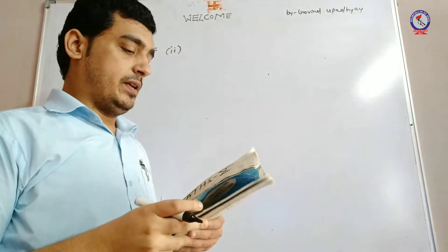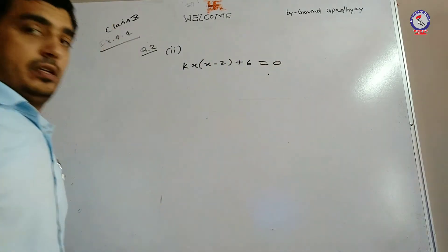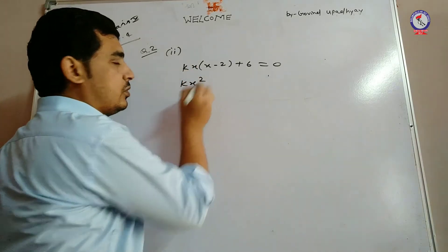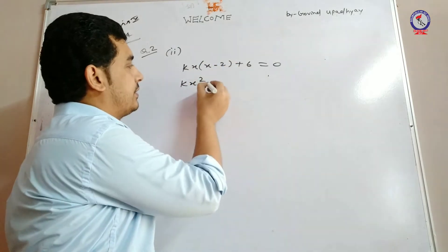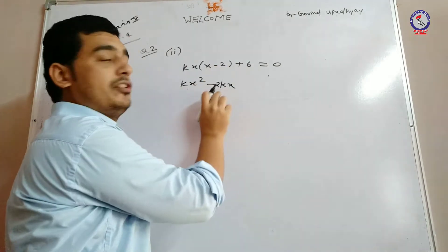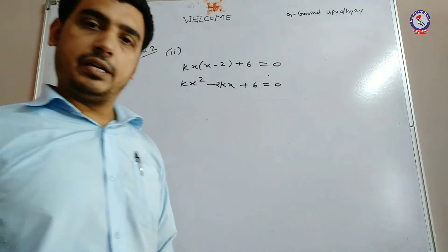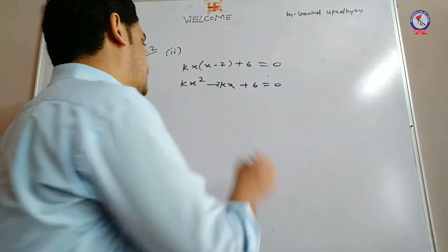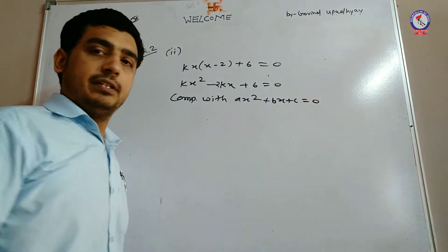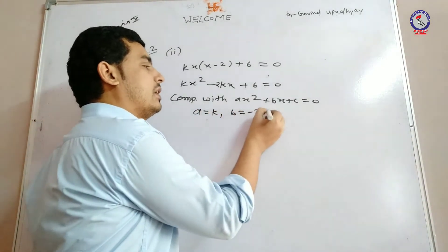अब इस question में kx(x−2)+6 है। इसको standard equation से compare करने से पहले multiply कर लें: kx squared minus 2kx plus 6 is equal to 0. Comparing with ax squared plus bx plus c equal to 0, a की value है k, b की value है minus 2k, और c की value है 6.